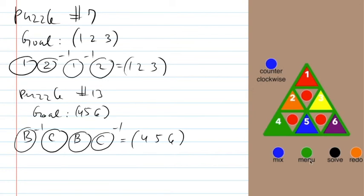These three-cycles are a very important idea that will be used extensively in the Rubik's Cube. Puzzle 11 is really the one to study, and then seeing how puzzles 7 and 13 use the same ideas. Now you can see how commutators can be intentionally constructed rather than just hoping they do something useful.